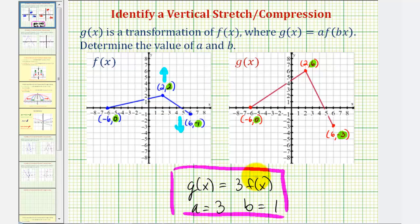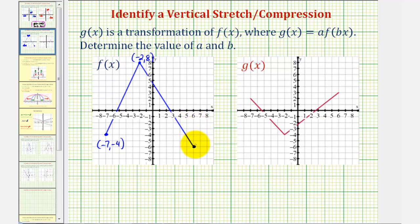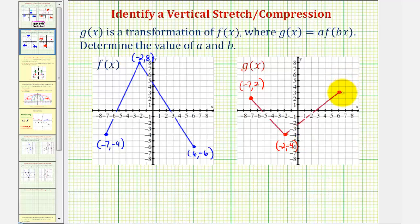Let's take a look at a second example. Let's begin by identifying the coordinates of key points on each graph. So for f of x, we have negative seven comma negative four, negative two comma eight, and six comma negative six. And then on g of x, we have negative seven comma two, negative two comma negative four, and six comma three.